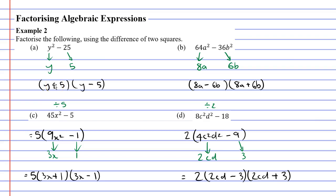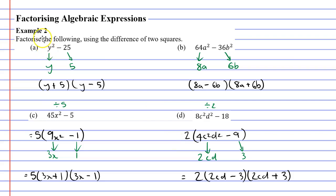Before we finish, there's something important to mention. In this example it told us to use the difference of two squares, but it's very unlikely you'll always be told how to factorize. So how do you know when to use it? It's not that difficult — every single expression here always had two terms with a minus sign between them. So as soon as you see that, it is very likely you need to use the difference of two squares. That concludes this video on example two. Remember to check the description for links to workbooks related to this video.